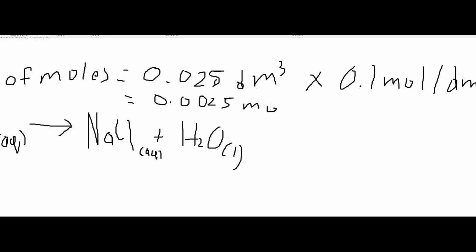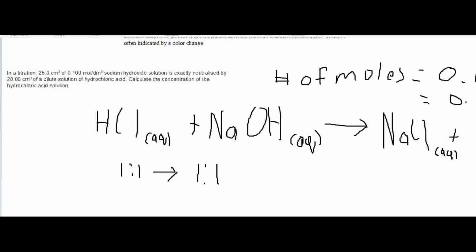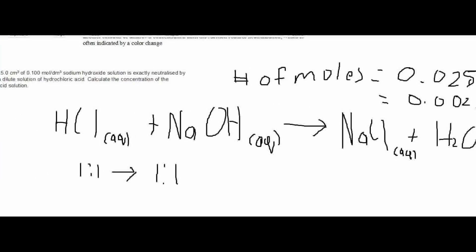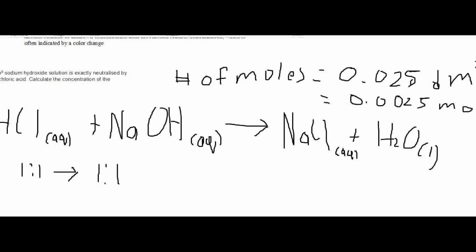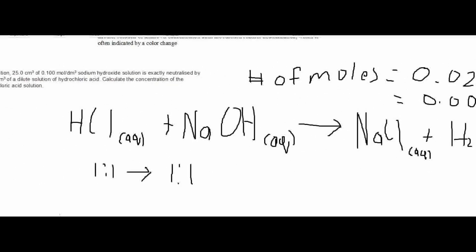Now what we know from doing the balanced equation is that the number of moles of sodium hydroxide equals the number of moles of acid. Hence we know that the number of moles of hydrochloric acid equals 0.0025 as well.